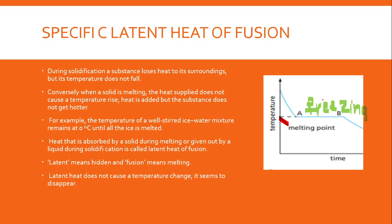This graph shows the behavior of a substance going through freezing. Initially it is liquid when the temperature is high, and as time increases we can see the temperature decreasing — that tells us we are going towards the freezing process. The first section of the graph depicts liquid, then from A to B we have the freezing process, and from B onwards we have an entirely solid substance.